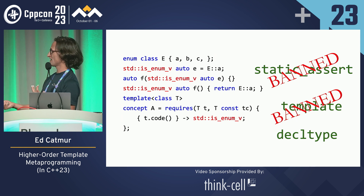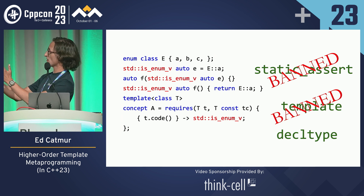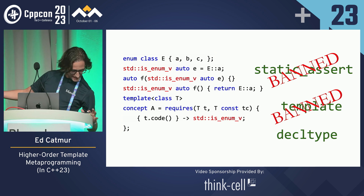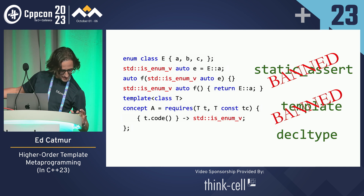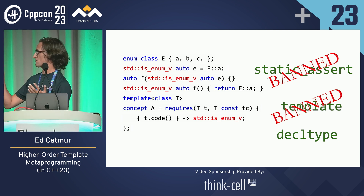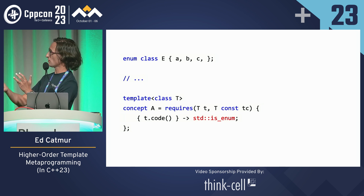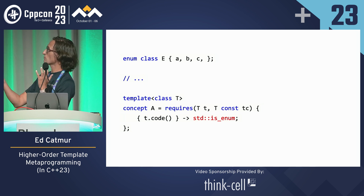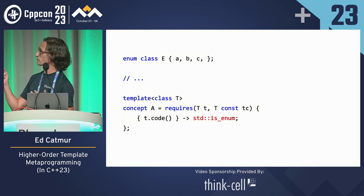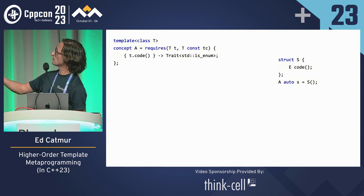A decltype is not a nice keyword to use, and we'd lose the elegance of the compound requirement — those are a much nicer way to express requirements, so we're not going to use that either. What if we remove the underscore V from the end? We've got a traditional type trait, which is a class template, which means we can pass it to a template. So we could actually write a concept called 'trait' which takes a trait as the second parameter, and this just works. Let's see it in use: we've got the class being tested on the right, the concept on the left — this just works.